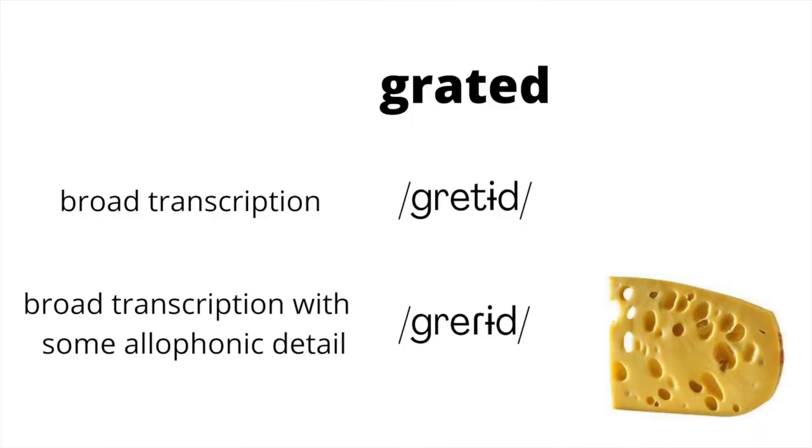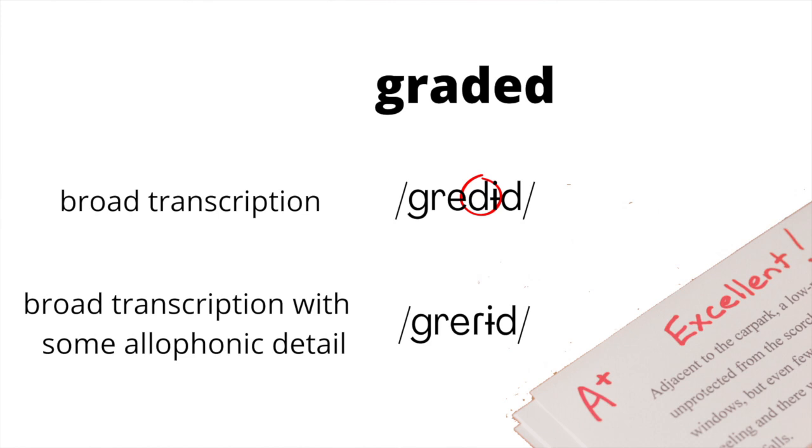But we're just going to talk about English. So if we have a word like grated — like he grated some cheese — we can have an alveolar tap there, because we have a T phoneme that occurred between two vowels and the first one was stressed. We also happen to have the word graded, meaning he graded all the papers, and there we have the underlying phoneme produced with the same quick striking production as the T phoneme was.